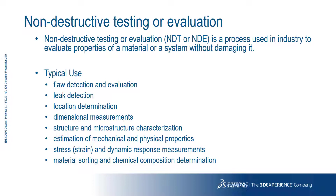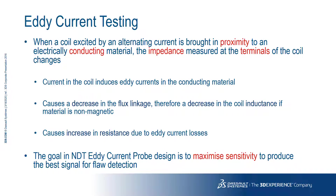Magnetic flux leakage is used for defect detection, and eddy current testing, which is sensitive enough to be used for gauging as well. Conventional eddy current testing is based on the fact that when a coil excited by an alternating current is brought in proximity to an electrically conducting material, eddy currents are induced, and the impedance measured at the terminals of the coil changes. The goal in the design process is to maximize sensitivity of the assembly.